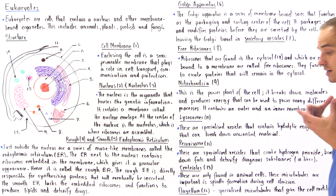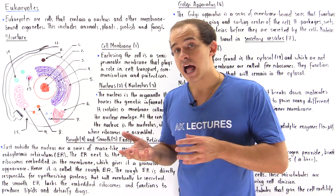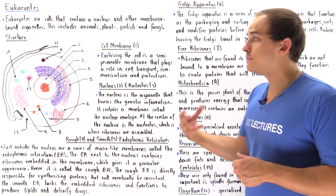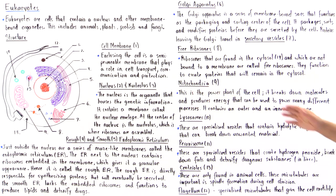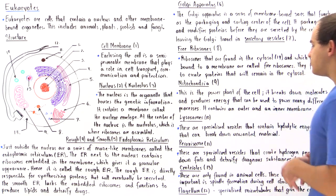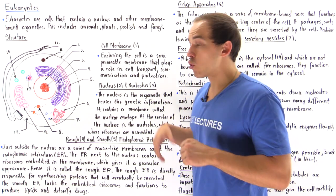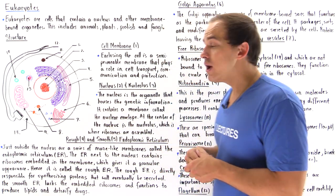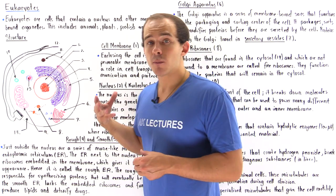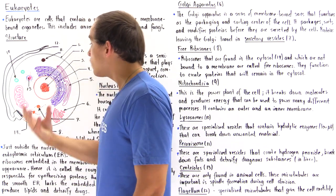Now let's move on to the mitochondria — a very important structure in the eukaryotic cell. The mitochondria is like a nuclear power plant: it transforms one type of energy into a different type that the cell can use to power different processes. It breaks down biomolecules and produces energy that can be harvested for many processes. It contains an outer layer as well as an inner membrane layer, and it also contains its own DNA and can undergo its own replication through a process known as binary fission.